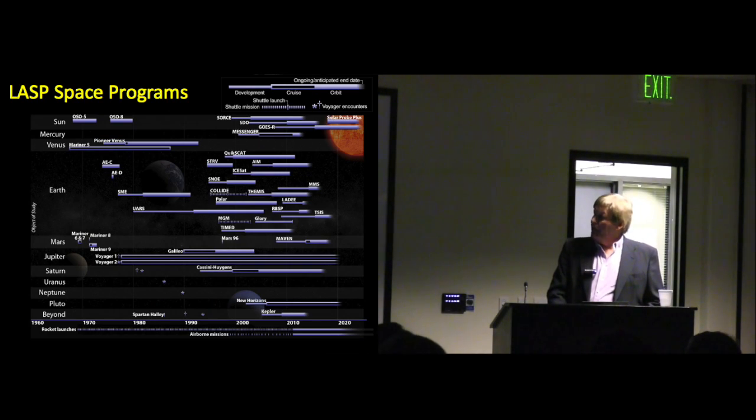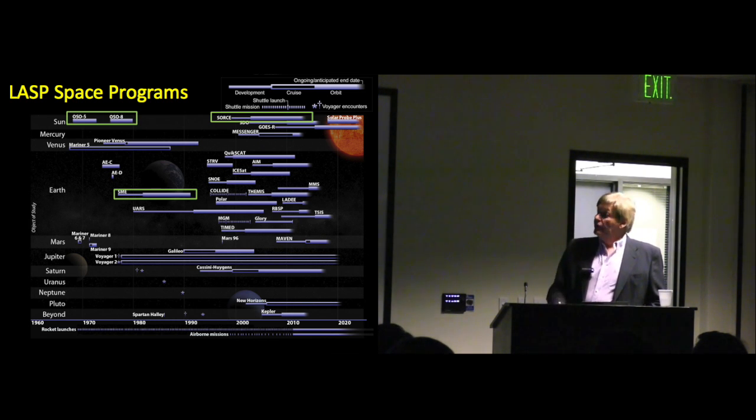This is trying in one chart to put on all the flight programs that have been carried out or are being carried out now over time. Along this axis are the objects of study: the sun, the planets, and beyond, former planets such as Pluto. Along this is the time axis, going back into the 1960s. I'm going to come back to this chart again and again with broad groupings of what I think are key areas of investigation.